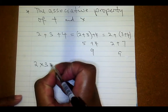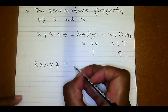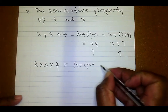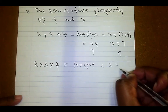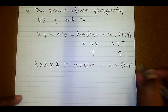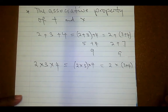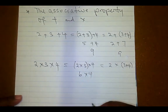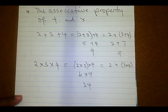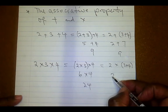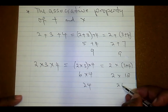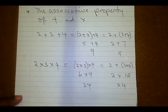The same applies for multiplication. For example, two multiplied by three multiplied by four: you can first multiply two by three to get six, then six multiplied by four gives 24. Or you can group three by four first — three times four gives twelve, then two times twelve also gives 24. That is your associative property.